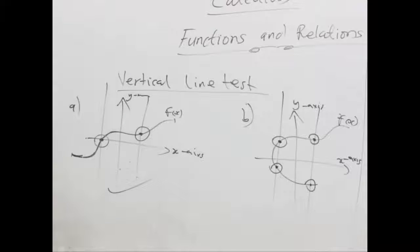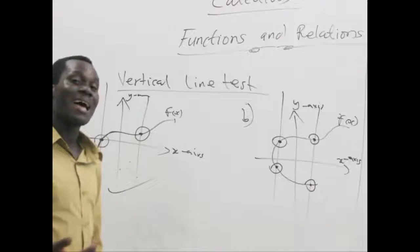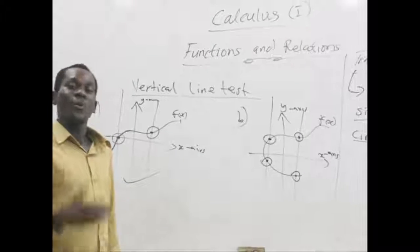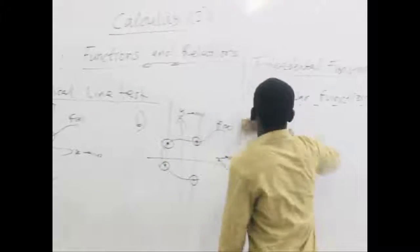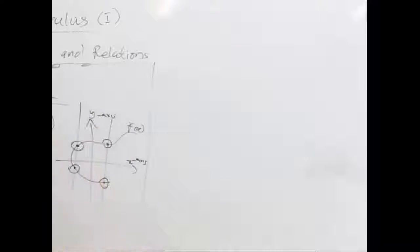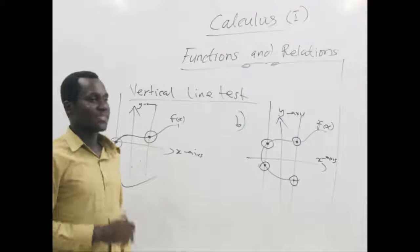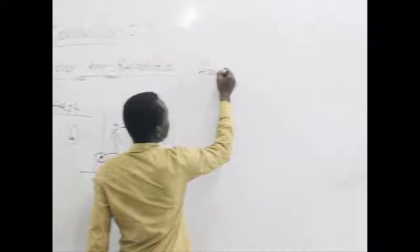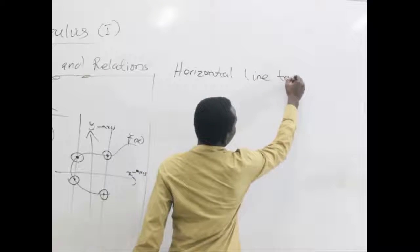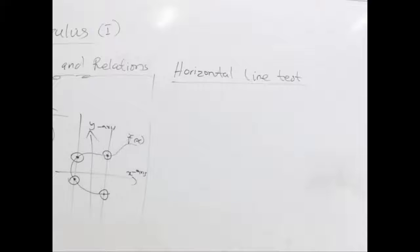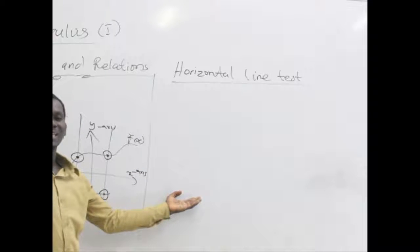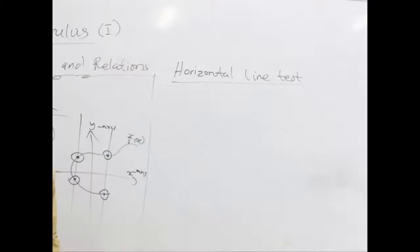The last area to cover today is to find out whether a particular function is one-to-one or not. We have a test for that as well. To test whether a graph of a function is one-to-one, we use what we call the horizontal line test. A horizontal line is a line that runs from east to west or west to east with no gradient. When we draw the horizontal line across any graph and it intersects the graph only once, it means that graph is a one-to-one function.